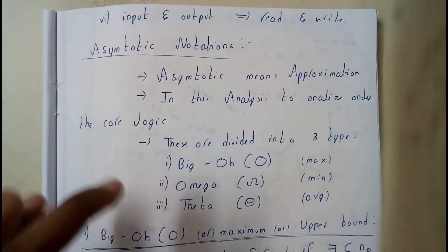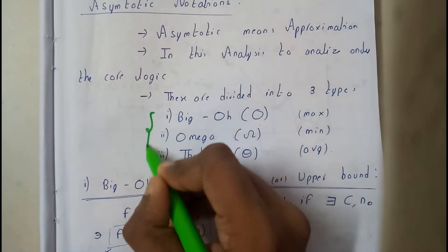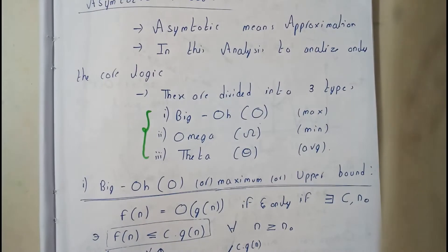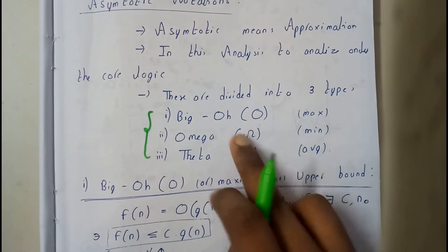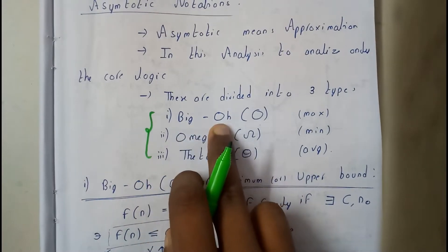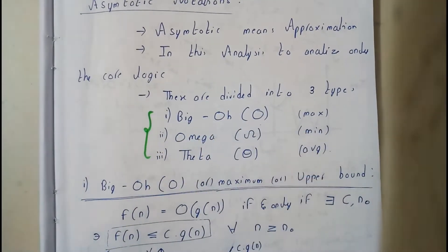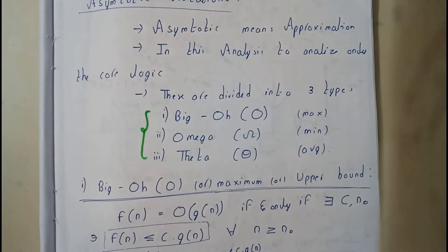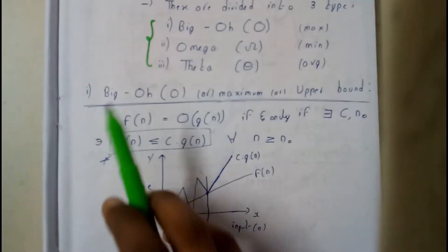These are further divided into three types: one of them is Big O, another one is Omega, and the other one is Theta. Big O gives the maximum value, Omega gives the minimum value, and Theta gives the average value. We'll be going in depth into each of them.